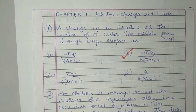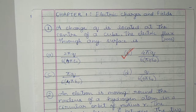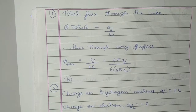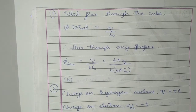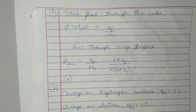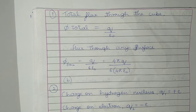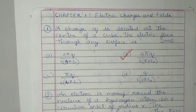Question 1: A charge q is located at the center of a cube. The electric flux through any surface is — according to Gauss's law, the flux through any closed surface is q by epsilon naught. Here in a cube there are 6 faces, therefore the flux is q divided by 6 epsilon naught, which is equal to 4πq divided by 6 into 4π epsilon naught. Therefore it is option B.